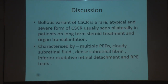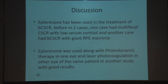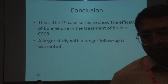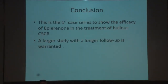Bullous variant of CSCR is a rare, atypical, and severe form, usually bilateral in patients on long-term steroids or post-organ transplantation, characterized by multiple PEDs, cloudy subretinal fluid, dense subretinal fibrin, inferior exudative retinal detachment, and RPE tears. Eplerenone has been used previously in three case reports — one multifocal CSCR with low serum cortisol, one bullous CSCR with giant RPE macrorib, and one combined with PDT and laser photocoagulation. The present study is the first case series showing efficacy of eplerenone in all four eyes with bullous CSCR, with two patients receiving additional micropulse laser. A larger study with longer follow-up is warranted.